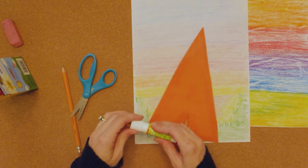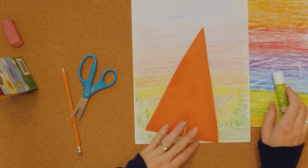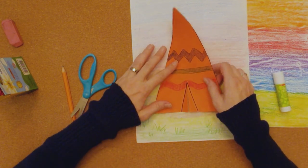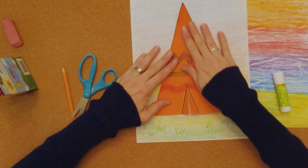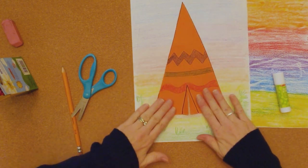Okay, now I'm going to put my lid back on my glue so I don't forget to do that. I'm going to flip my teepee over. I'm going to put it right here. I'm going to rub it down so it's nice and flat.